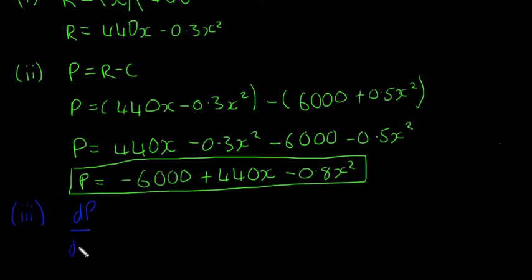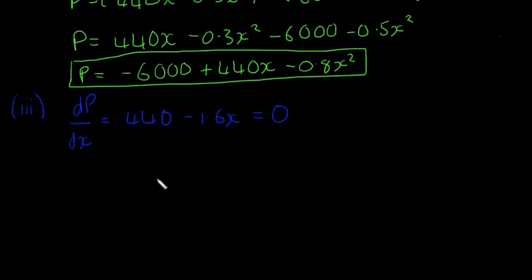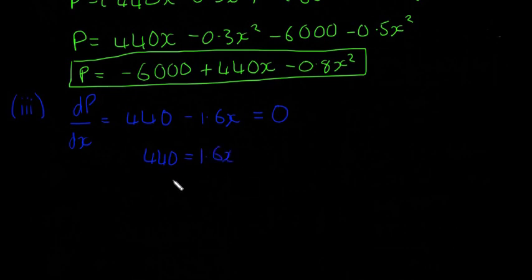Step three is going to be differentiate. So that means dP/dx, remember we differentiate it, is going to be equal to, so this is going to go to zero. It's going to be 440 minus 1.6x, because 2 by 0.8 will be 1.6. And we'll let that equal to zero. So that means 440 is going to be equal to 1.6x, and I'm going to write that this way, 1.6x is equal to 440, and that means x is going to be equal to 275.